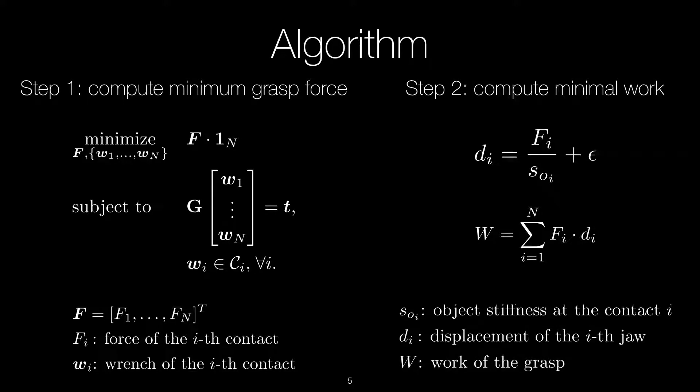Based on the grasp force and object stiffness, we then infer the object deformation and the displacement of the gripper jaws. The minimum required work is the product of the grasp force and the displacements.